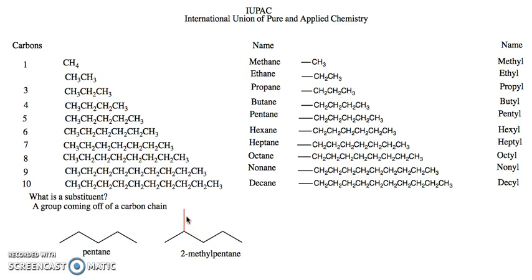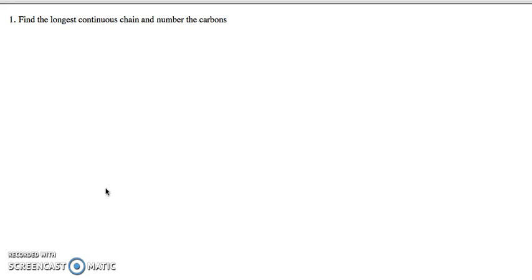We need to talk about how we decide what is our main chain, or parent chain, and what is our substituent. The general rule is that the parent chain — the one that gets the -ane ending — is always going to be the longest continuous chain. So the first thing we do when naming an alkane is find the longest continuous chain.